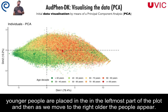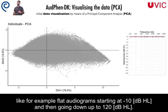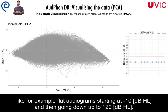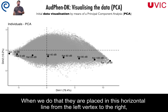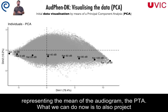We can color-code all these data points by age or age group, and we can see that the younger people are placed in the leftmost part of the plot, and then as we move to the right, older people appear. What we can do now is to project into this space known audiometric shapes — for example, flat audiograms starting at minus 10 dB going down to 120 dB — and when we do that, they are placed in a horizontal line from the left vertex to the right. So moving along the first component to the right corresponds to worse hearing, representing the mean of the audiogram, the PTA.